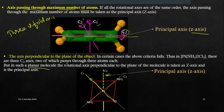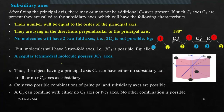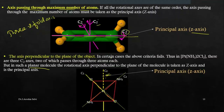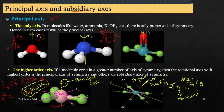So in that way the principal axis is identified, and the rest of the axes are said to be the subsidiary axes. In the case of XeF4, C4 is the principal axis and the C2s are the subsidiary axes. Similarly for BF3, C3 is the principal axis and the C2s are the subsidiary axes.